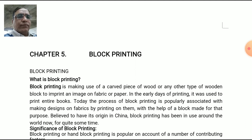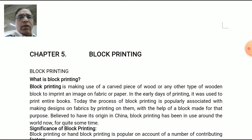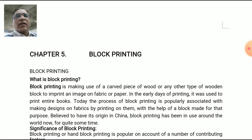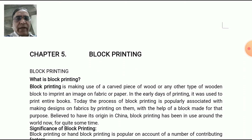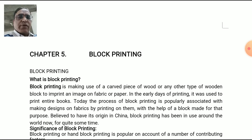So what is block printing? This is basically making use of carved pieces of wood or any other type of wooden block to imprint an image onto the fabric. Block printing is a method of printing where we use wood or any other material to make impressions on a piece of fabric. Today the process is popularly associated with making designs on fabrics by printing with the help of a block made for that purpose.